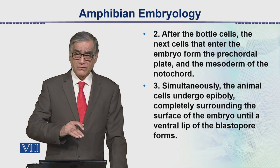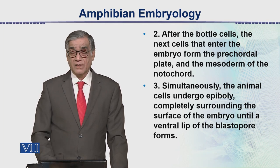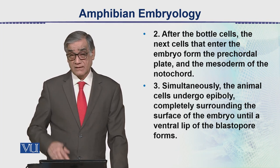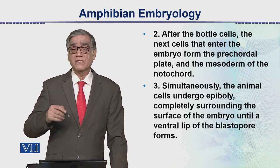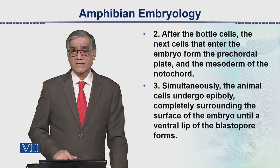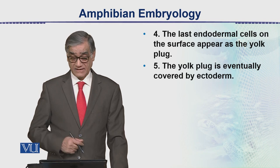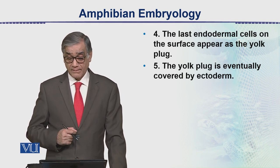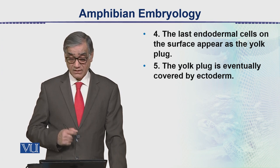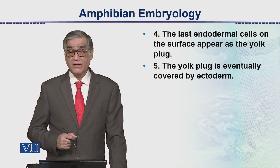The epiboly completely surrounds the surface of the embryo until a ventral lip of the blastopore forms. The blastopore has a dorsal lip, a ventral lip, and a lateral lip, forming a rounded structure. Inside this rounded structure we can see the yolk, forming what is called the yolk plug — the last endodermal cells on the surface.